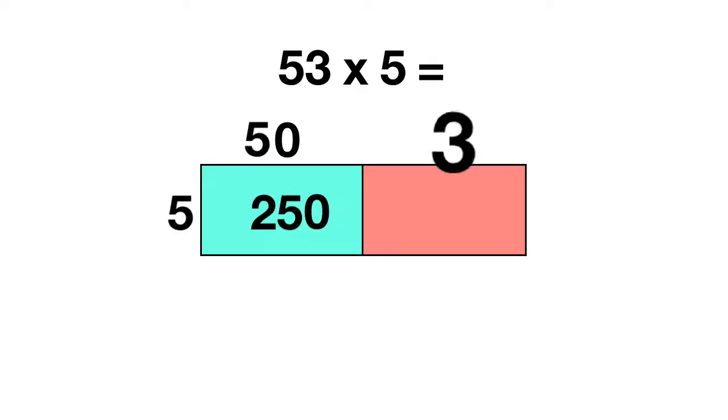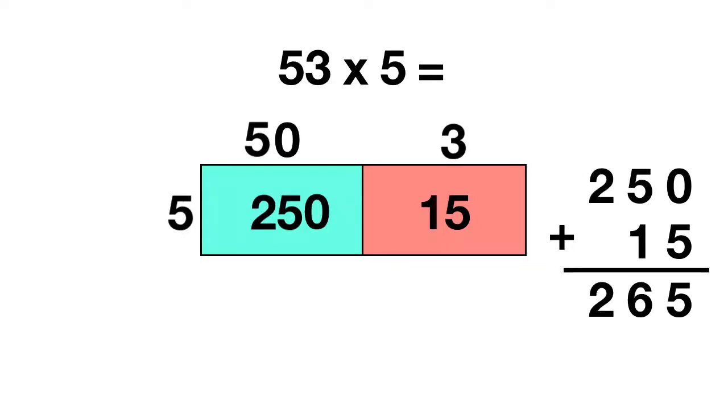Next you can multiply 3 times 5 in this pink box. 3 times 5 just gives you 15. Now all you need to do is take your 250 and add the 15. You can add that: 0 plus 5 gives you 5, 5 plus 1 gives you 6, and just this 2 is a 2. So your answer is 53 times 5 equals 265.